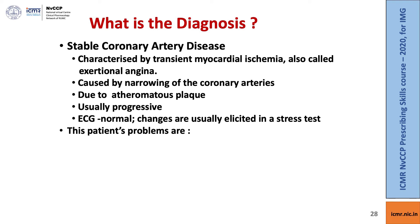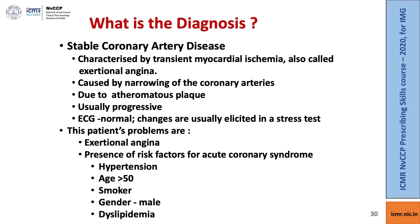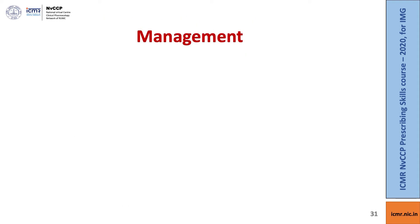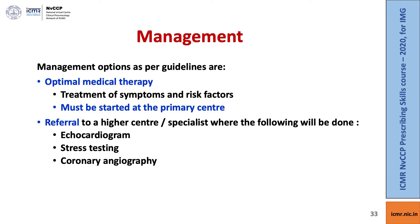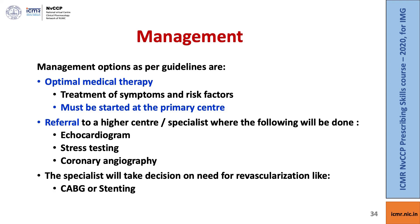This patient's problems summarized are exertional angina and the presence of the following important risk factors: hypertension, age over 50, smoking, male sex with additional risk, and dyslipidemia. As per guidelines, these are the options to manage: optimal medical therapy for the treatment of symptoms and risk factors must be started at the primary care level itself. Then refer to a higher center or specialist where an echo test, stress testing, and coronary angiography would be done. The specialist will thereafter take a decision for the need of revascularization, such as coronary artery bypass graft or stenting.